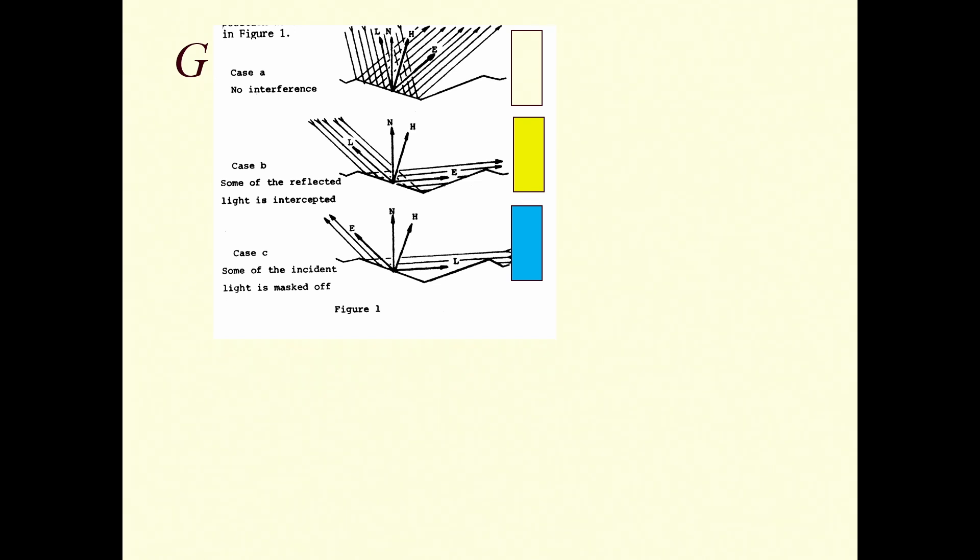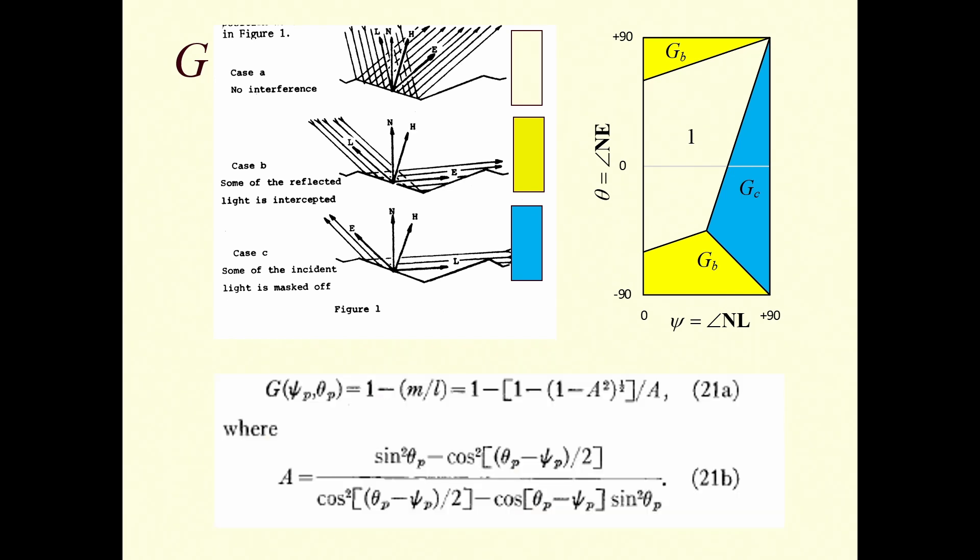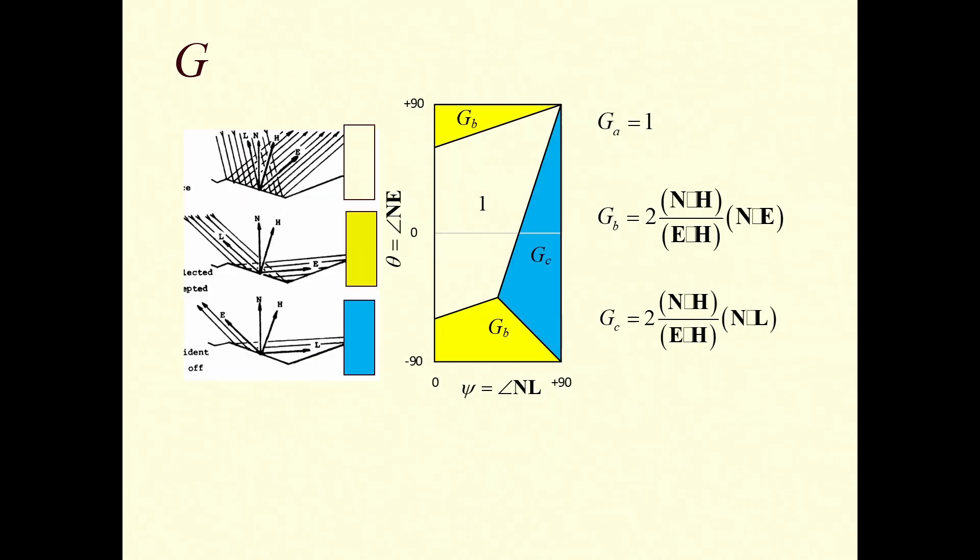The other factor was G, which is the thing coming in from different directions. These facets kind of mask themselves off. There's three different cases that can happen: no interference, some intercepted, some reflected. Torrance had a way of calculating how much effect this had. Using angles, there were three different regions in this two-dimensional space with three different equations. My God, we don't want to calculate that at every pixel. So I spent two or three weeks playing with trig identities trying to simplify this. I went back to the geometry and figured out that the masking or shadowing can come from just N dot H. Much simpler calculation. You don't have to figure out which region you're in. You just calculate all three of these things and take the minimum. That gives you the geometric attenuation factor.